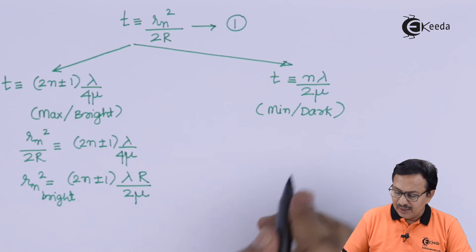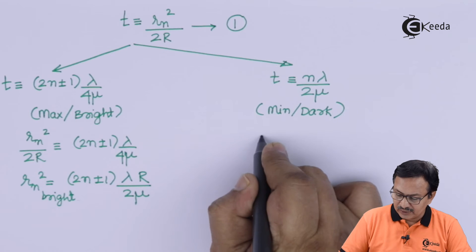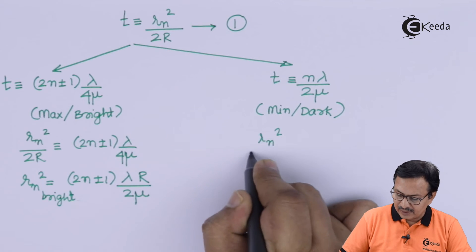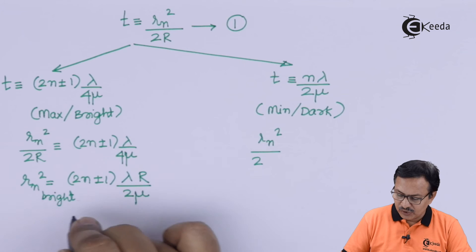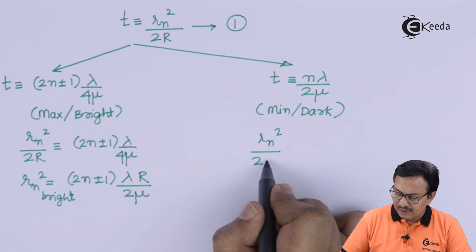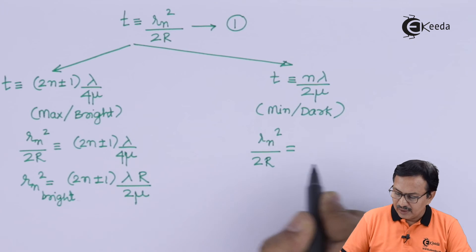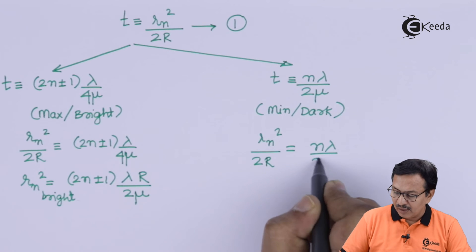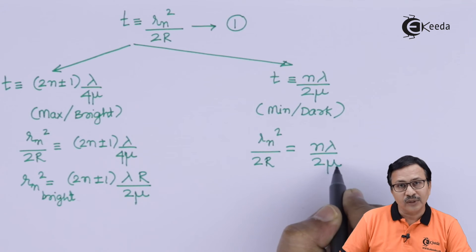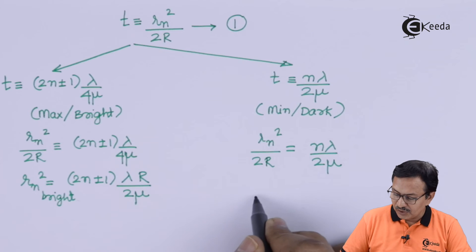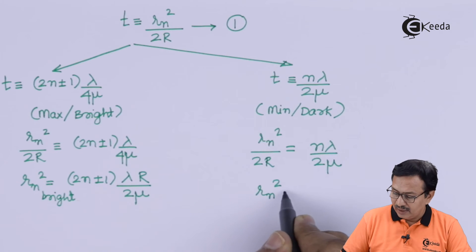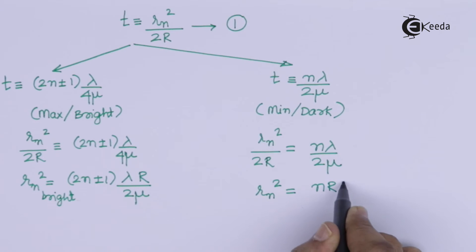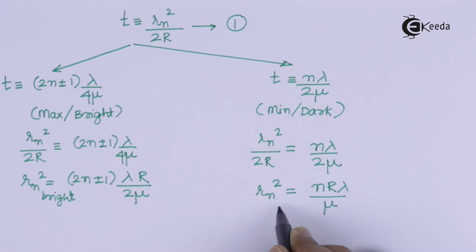Similarly, for the dark ring, Rn² / 2R = Nλ / 2μ, which gives Rn² = NRλ / μ. This is the expression for the radius of the Nth dark ring.